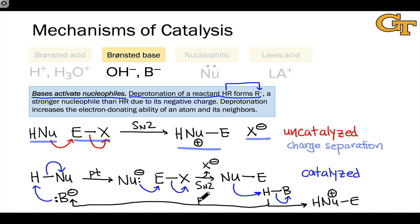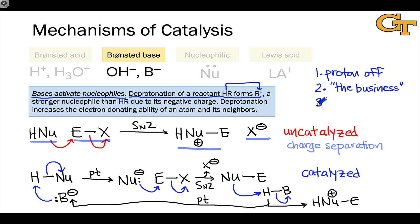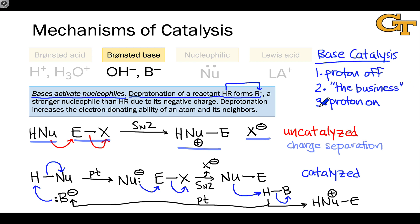In the base-catalyzed pathway, we see a series of elementary steps similar to what we encountered in acid catalysis. In the first step, rather than putting a proton on the electrophile, we take a proton off the nucleophile. Once that proton is removed, it lowers the activation energy of what we call the business elementary step — here an SN2 step. In the third step, to regenerate the catalyst and generate one of the products, we put a proton back on. This is a general three-step pattern for Brønsted base-catalyzed reactions: proton off, something happens, proton on — a cycle that can repeat when multiple business elementary steps are involved.